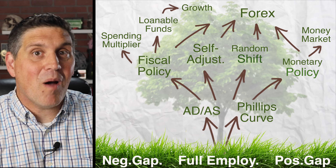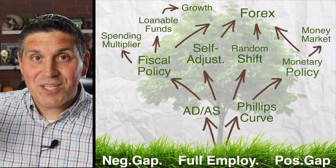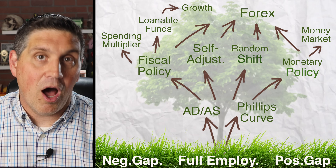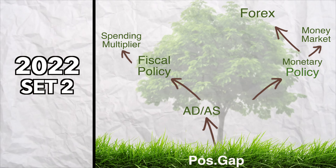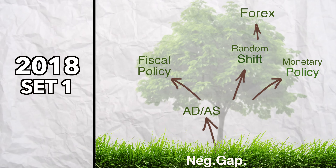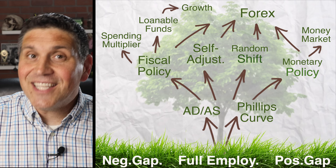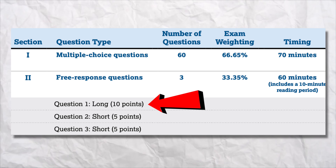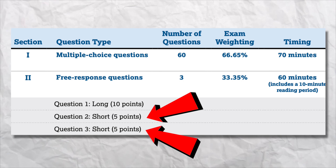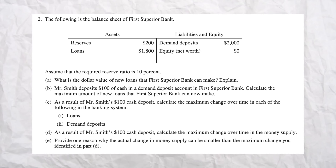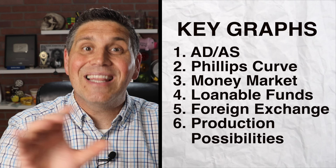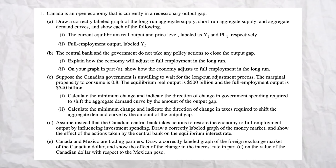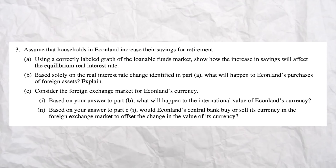If there are any more questions, they're going to ask you about foreign exchange and how one of these changes affects exchange rates. That's the AP Macroeconomics free response number one topic tree. It doesn't give you the answers, but it simplifies things so you know what to expect. Now remember, this is only for the first free response — the other two are a free-for-all, covering topics from only one or two units. It could be comparative advantage or bank balance sheets, or calculations like the GDP deflator and the unemployment rate. One thing's for sure: across the three free responses, you're going to draw at least four of the six key graphs.